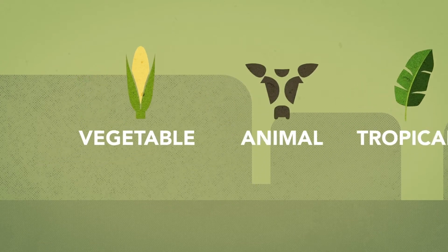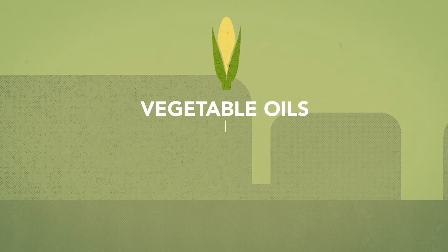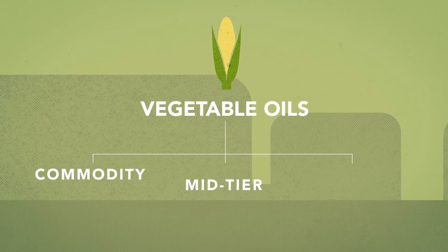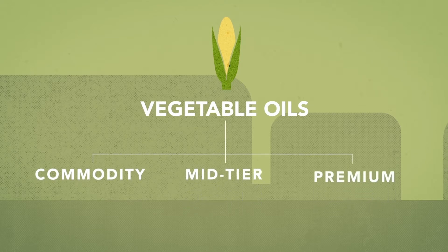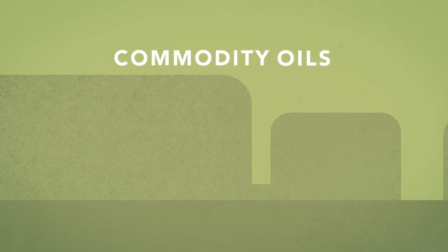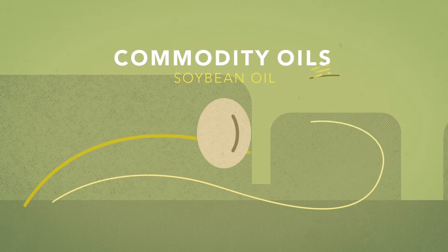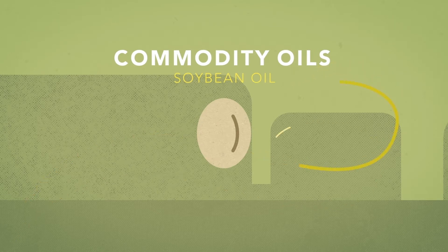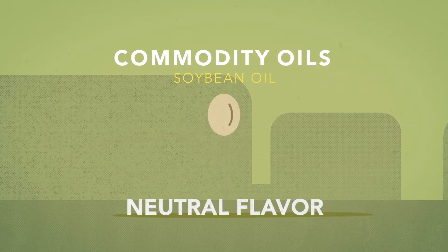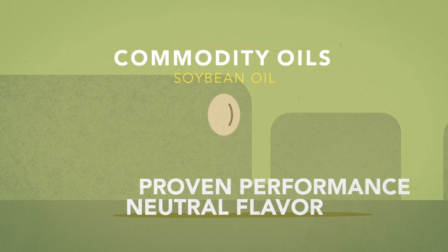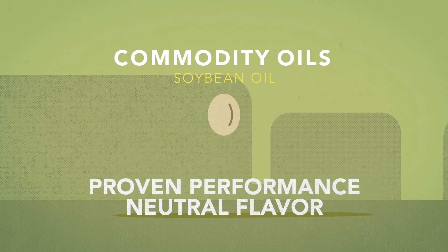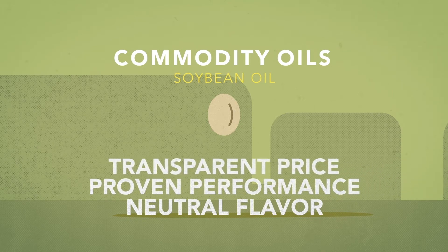Vegetable oils fall under three categories of their own: commodity, mid-tier, and premium. Commodity oils, such as soybean oil, is the most widely used edible oil in the United States because of its neutral flavor, proven performance in a wide variety of applications, and transparent price.